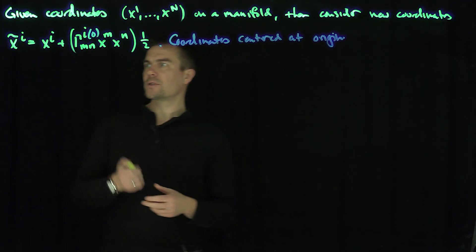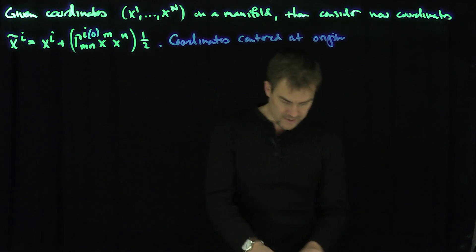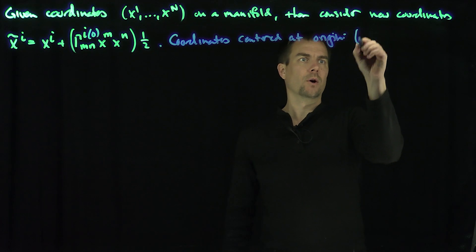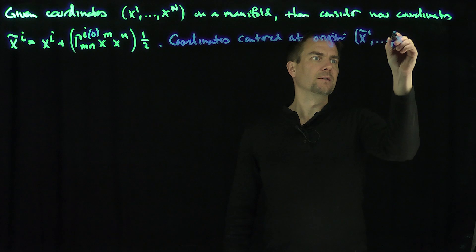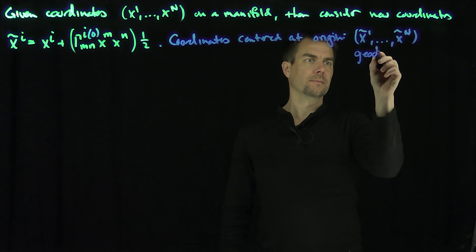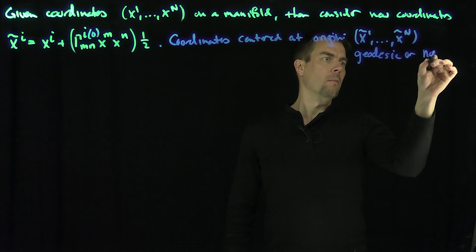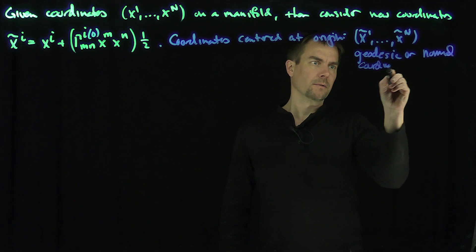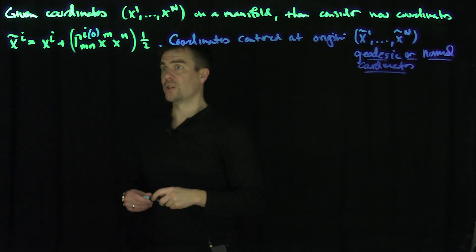Now I want to differentiate these equations with respect to x_j. These new coordinates x_tilde_1 through x_tilde_n are called geodesic or normal coordinates. These are very powerful coordinates — you're basically following the geodesic flow.